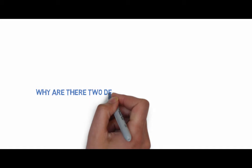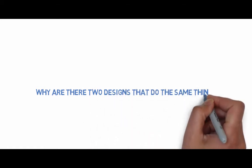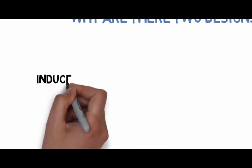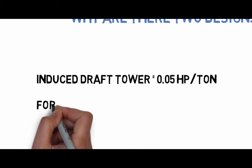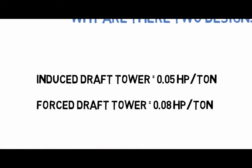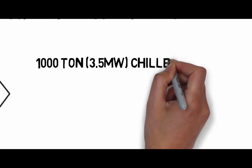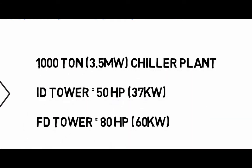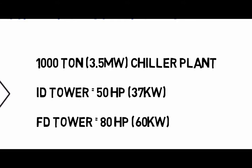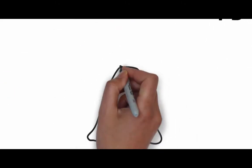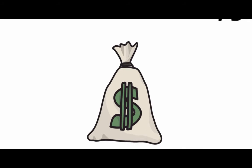So a logical question is: why are there two tower designs that do the same thing? Induced draft towers are typically preferred over forced draft because they require less energy to do the same job. Induced draft towers typically require about 0.05 horsepower per ton, while forced draft towers typically require about 0.08 horsepower per ton. In a 1,000-ton or 3.5-megawatt chilled water plant, that means a 50-horsepower or 37-kilowatt tower versus an 80-horsepower or 60-kilowatt tower — which over the course of the tower's lifetime can be a difference of tens of thousands of dollars in operational costs.